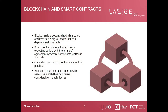We start this presentation by giving you some context. First and before all, we need to recall the main characteristics of blockchain, which is a decentralized, distributed, and immutable digital ledger that can deploy smart contracts. Smart contracts are self-executing scripts with the terms of agreements written in code. Due to the nature of the blockchain, they cannot be patched or have any type of oversight or problems solved after deployment. Because of these characteristics, they are very attractive targets to exploits and possible bugs.